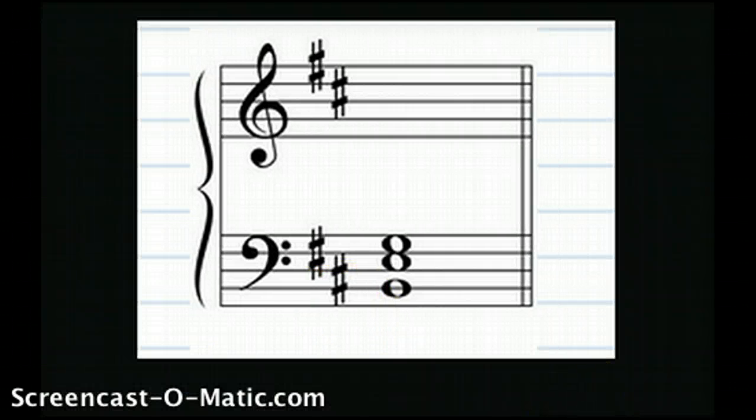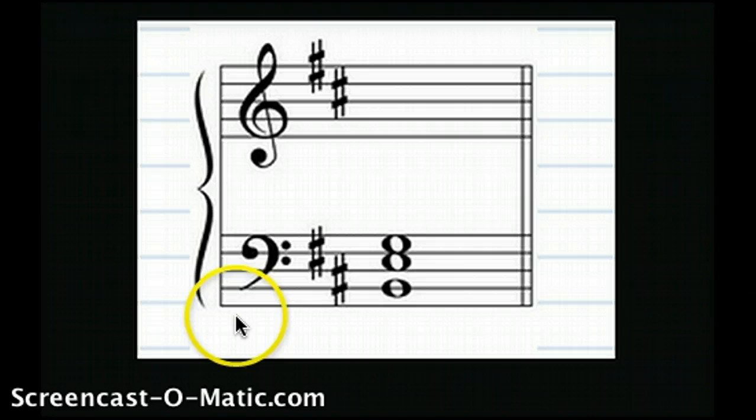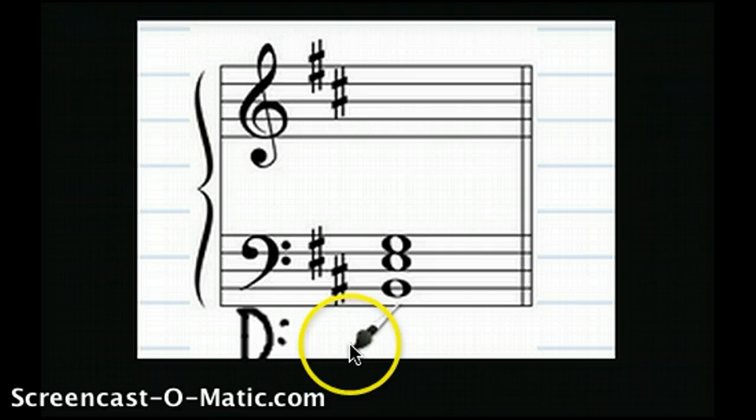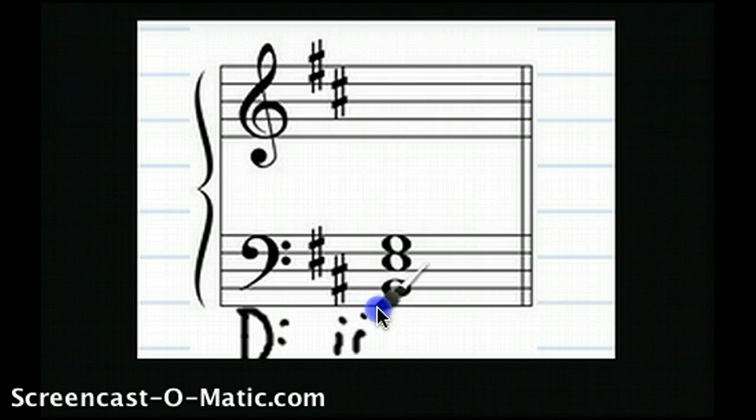So a proper Roman numeral analysis actually would look like this. You'd write D, and then you would write, this is an E chord, so that starts on the 2. So you write a lowercase number 2, and then you would write 6, 4.